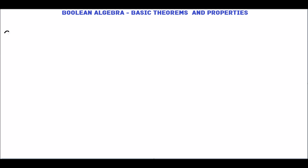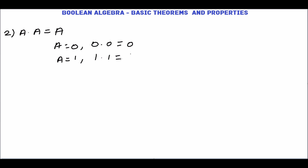The next theorem is a · a = a. If a = 0, then 0 · 0 = 0. If a = 1, then 1 · 1 = 1. In the logical AND operation, if both inputs are 0 the output is 0, and if both inputs are 1 the output is 1. We will prove this.